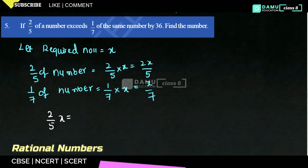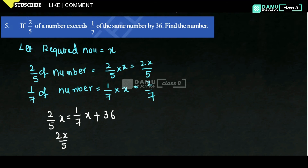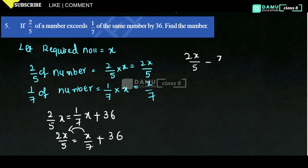Exceeds means addition, so 2x by 5 equals x by 7 plus 36. Rearranging, 2x by 5 minus x by 7 equals 36. Taking LCM of 5 and 7, which is 35, we get 2x into 7 minus x into 5 all over 35 equals 36.